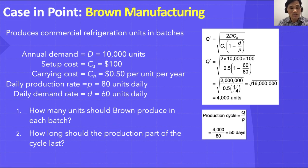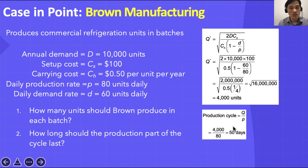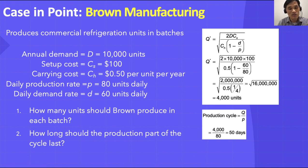For the second question — how long should the production part of the cycle last — the production cycle is EOQ divided by the daily production rate. That is 4,000 units divided by 80 units per day, which gives 50 days. So the production part of the cycle lasts 50 days.